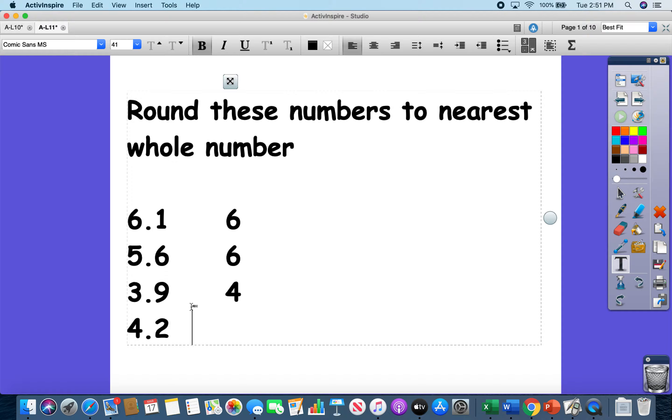And then my last one, 4.2, look at the number to the right of the decimal, 2, 2 rounds down, so that means that this one is going to round to 4 as well.